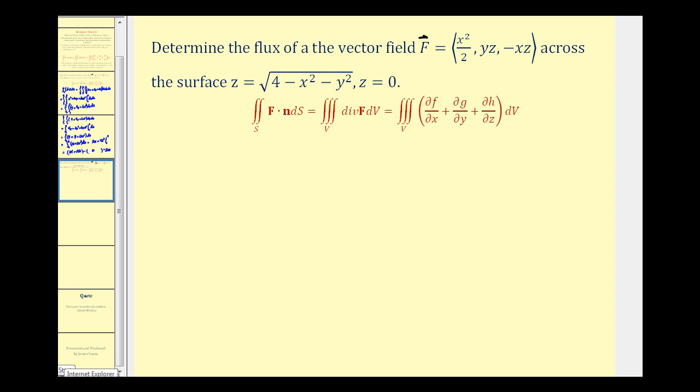Let's go ahead and determine the flux. So we're going to have the triple integral of div F dV. The partial derivative of F with respect to X gives us X, plus the partial derivative of G with respect to Y gives us Z, plus the partial derivative of H with respect to Z gives us negative X.